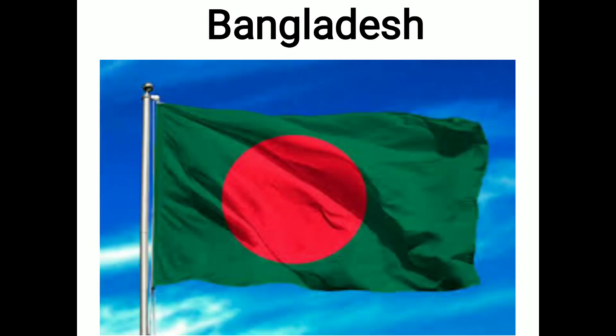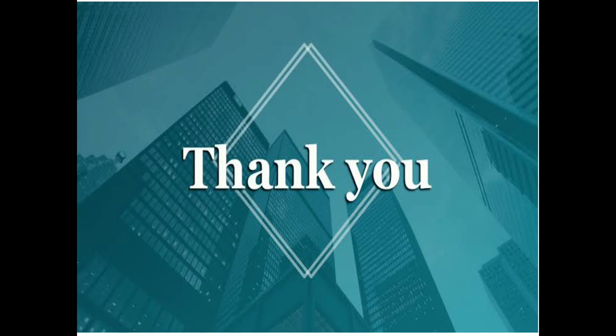The last flag is the flag of Bangladesh. The national flag of Bangladesh was officially adopted on 17th January 1972. It consists of a red disc on a dark green banner. The red disc is offset slightly toward the hoist so that it appears centered when the flag is flying. I hope you understood well. Have a nice day. Bye. Thank you.